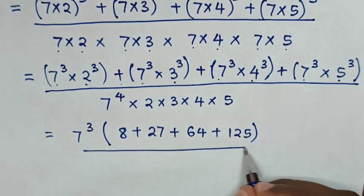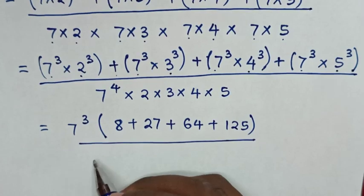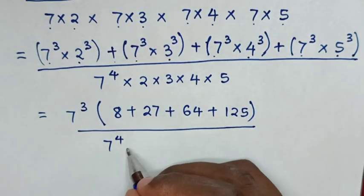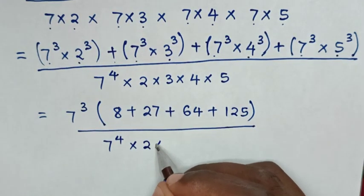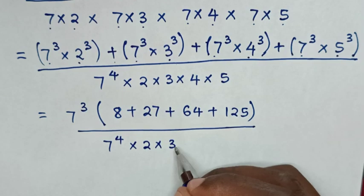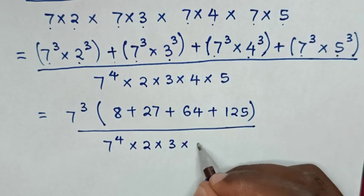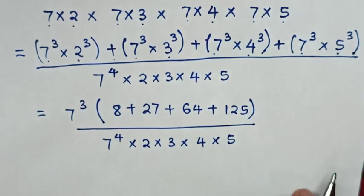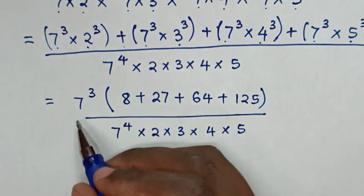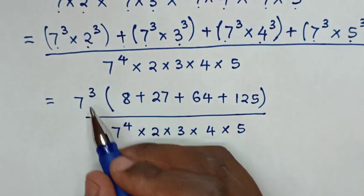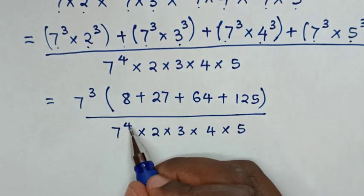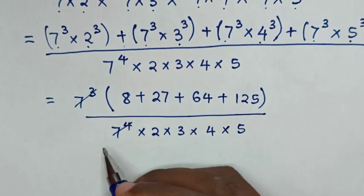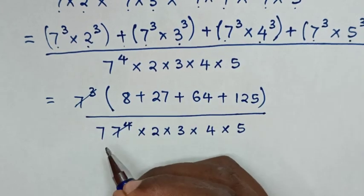Then over 7 power 4 times 2 times 3 times 4 times 5. To simplify, 7 power 3 divided by 7 power 4 cancels, leaving 1 over 7.